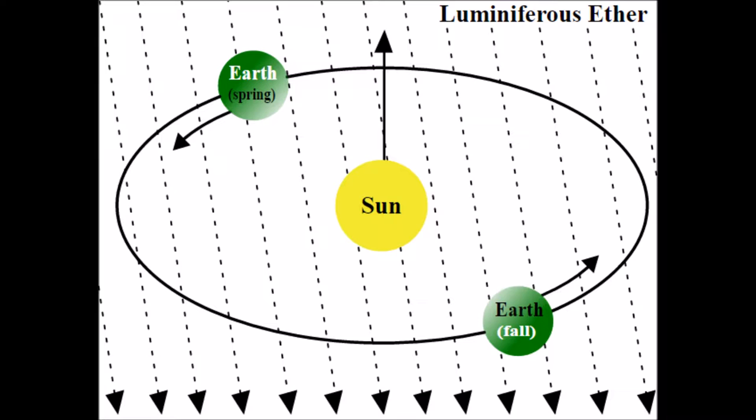After two test iterations and months of data collection, the expected fringe shift was not seen, and thus the theory of the existence of ether wind was rejected.